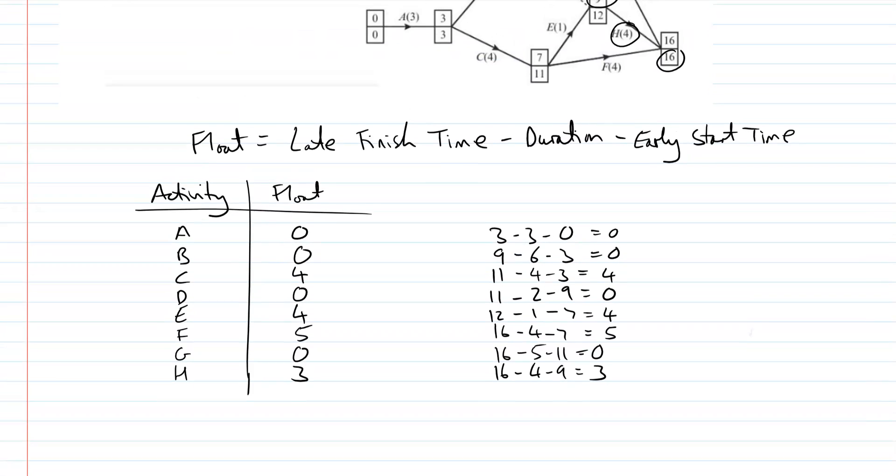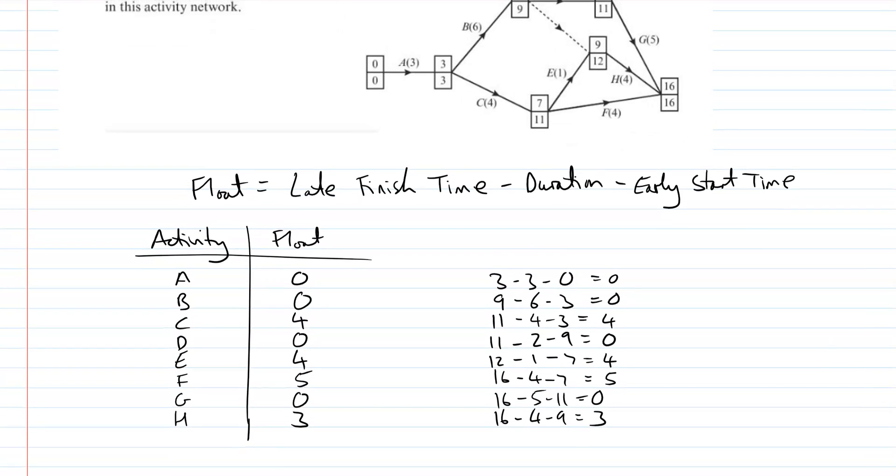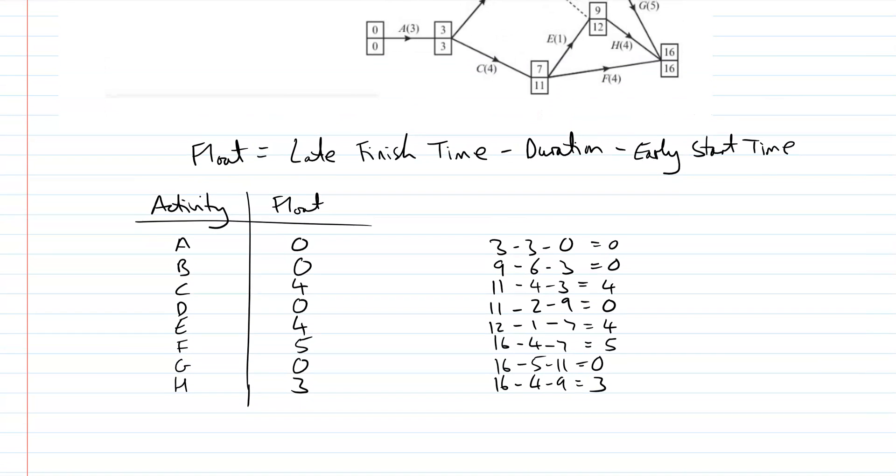Okay, so pretty simple to calculate. It should make sense. Float is the late finish time minus the duration and the early start time, and it's how much you can delay something by and not have to delay the whole project.